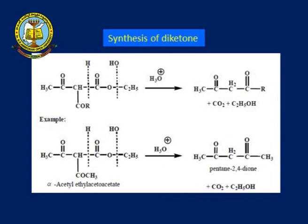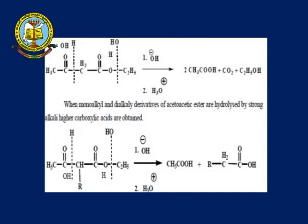Diketones can also be synthesized by taking the C-acyl derivatives of ethyl acetoacetate and performing hydrolysis. The CO2 is eliminated from the middle point and ethyl alcohol is removed from the terminal group, giving a diketone compound. When the acyl group is acetyl (COCH3), this reaction gives pentane-2,4-dione along with CO2 and ethyl alcohol. In this way, a variety of carboxylic acids and ketone compounds can be obtained from ethyl acetoacetate.